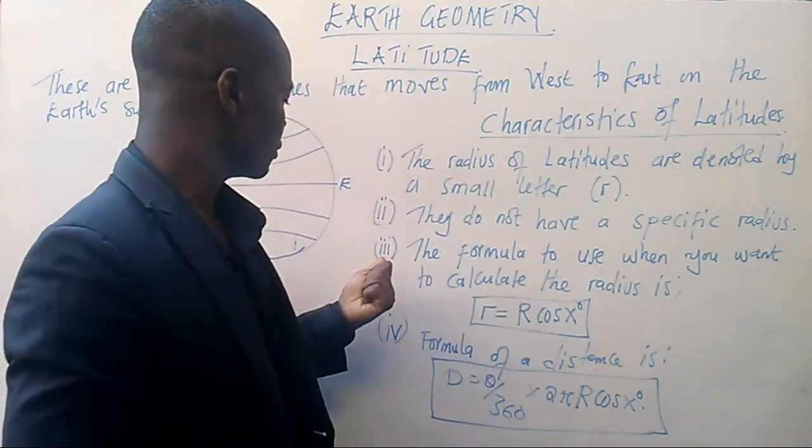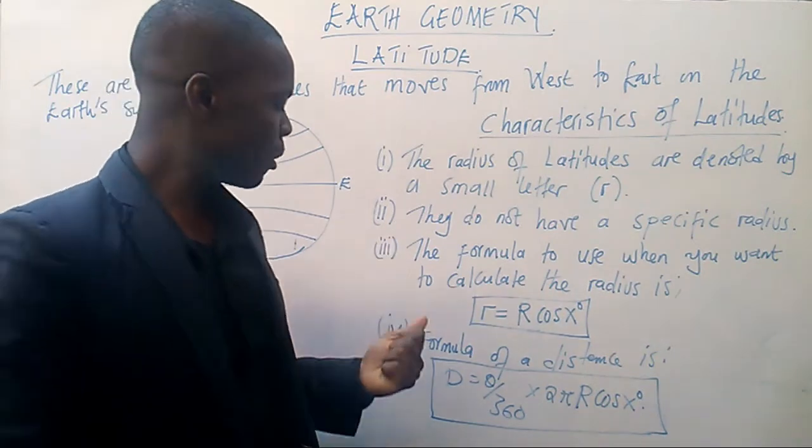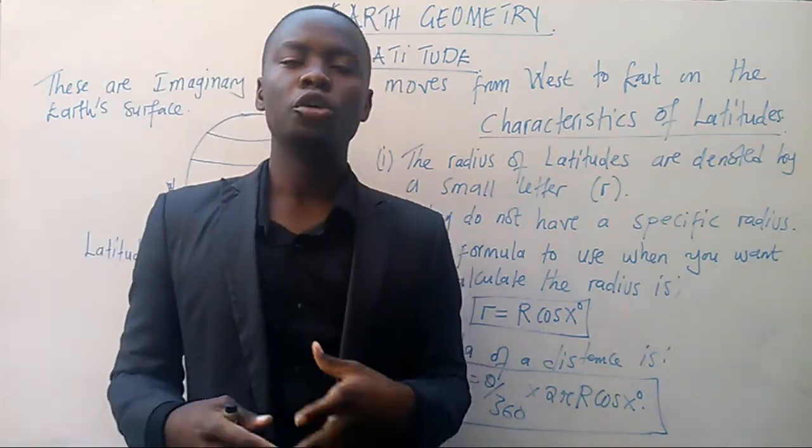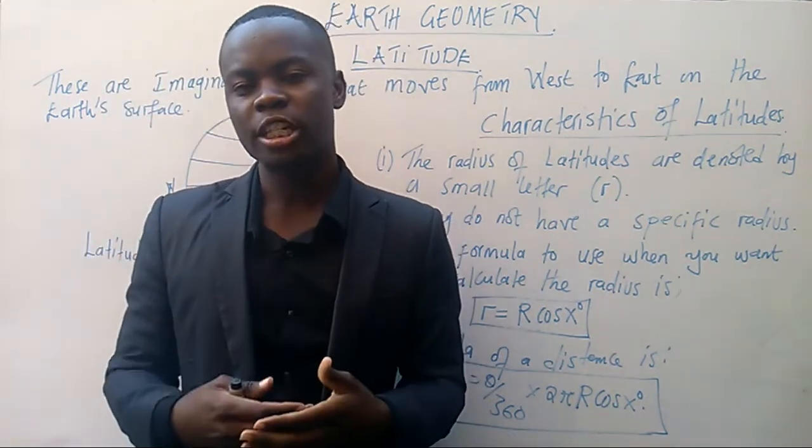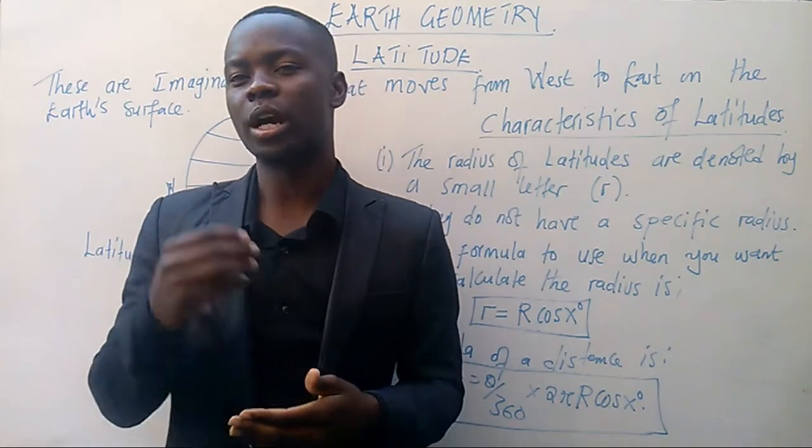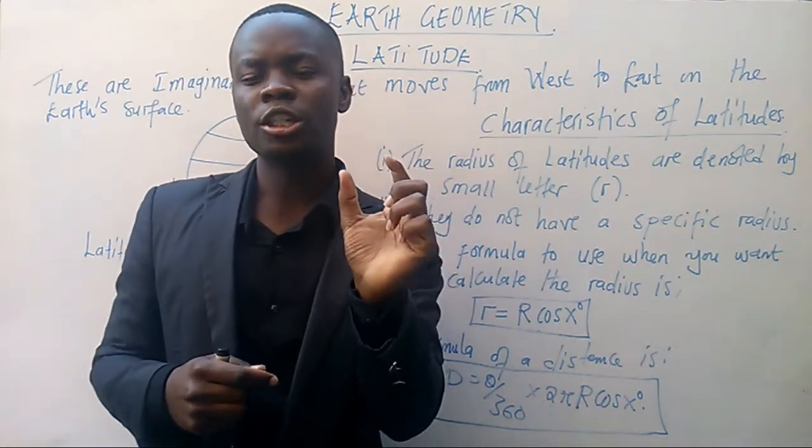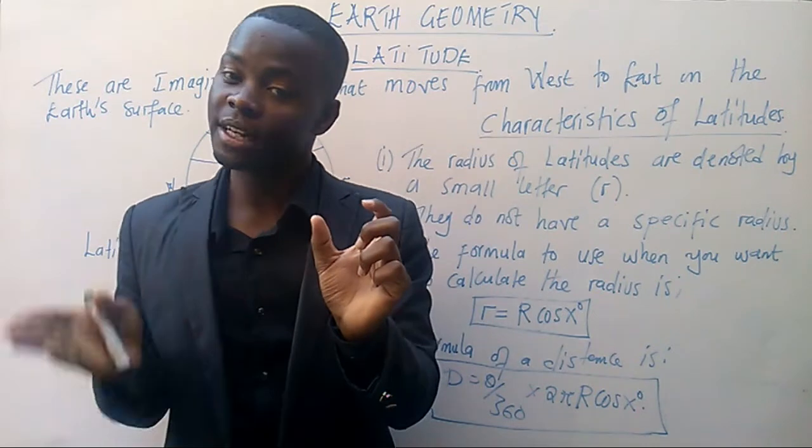Let's go to the third point. The third point talks about the formula which we can use to calculate the radius of a latitude, to calculate that small letter r, since we say that they don't have a specific radius.